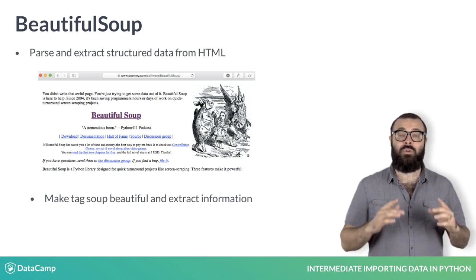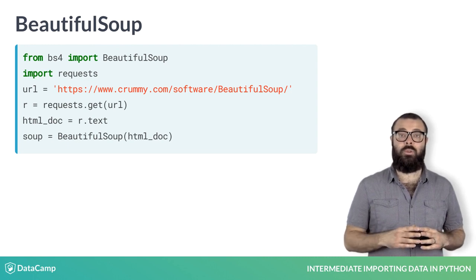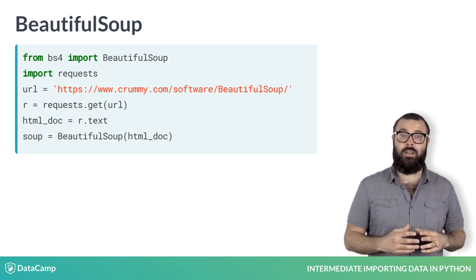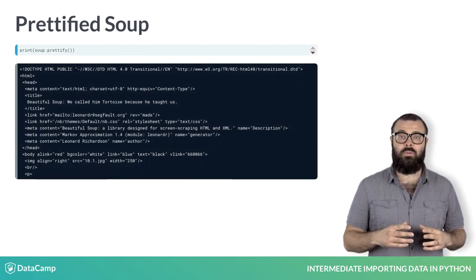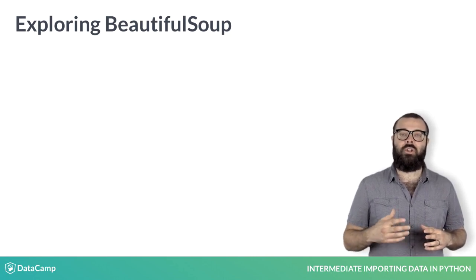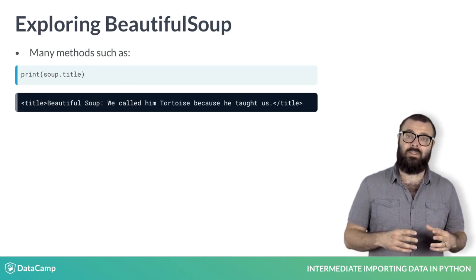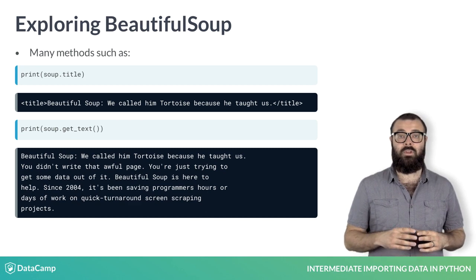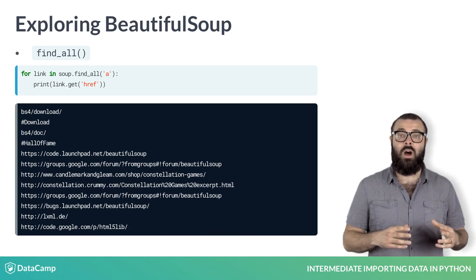Let's now see Beautiful Soup in action. You use requests to scrape the HTML from the web, then you create a Beautiful Soup object from the resulting HTML and prettify it. Printing the prettified soup and the original HTML, you can see that the prettified soup is indented in the way you would expect properly written HTML to be. You'll also work with the Beautiful Soup method find_all in order to extract the URLs of all the hyperlinks in the HTML.